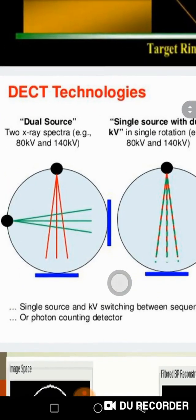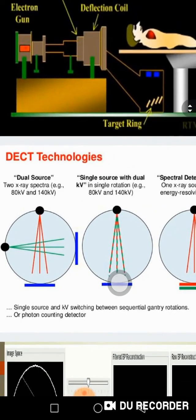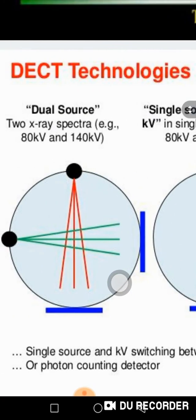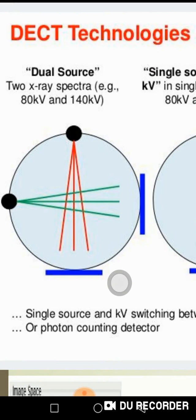There is a technology called dual energy CT that uses dual source — two X-ray sources, each providing different energy levels. One source provides 80 kV and the other provides 140 kV. A single detector is used to cover the area in less time, giving you two spectra of energies. Alternatively, using dual energy source and dual detector reduces imaging time further. You can also use one source that moves 360 degrees around the patient, alternating between 80 kV and 140 kV.